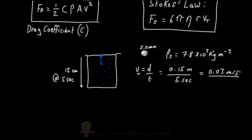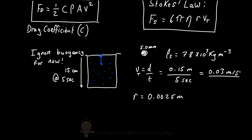The average velocity is distance over time: 0.15 metres divided by 5 seconds, giving a velocity of 0.03 metres per second. Because terminal velocity happens quickly for particles in fluids, this is a close approximation to the terminal velocity of the particle. The radius is half the diameter, so the radius equals 2.5 mm, which is 0.0025 metres.